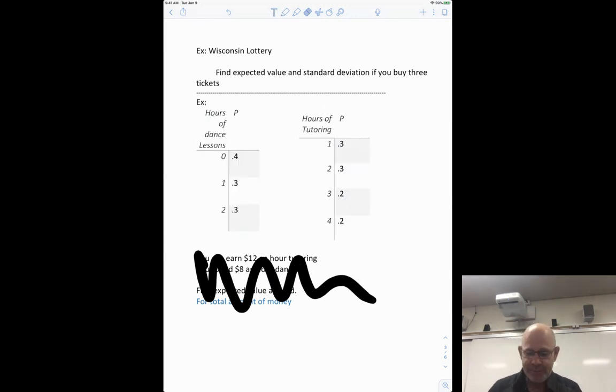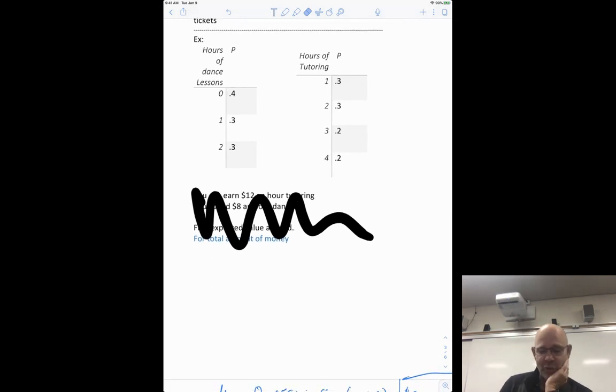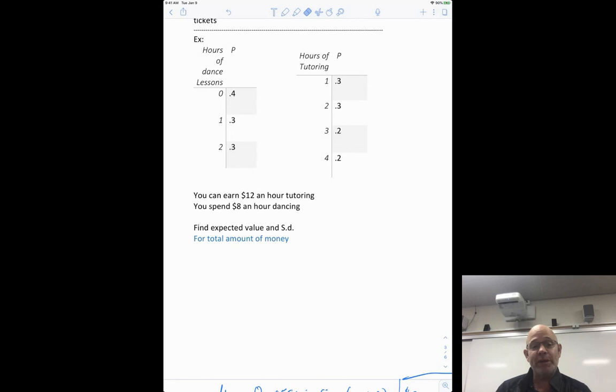So this allows us then to do a question like this. We've got this person who, that Wisconsin lottery, who each week dances, takes dance lessons for a certain amount of hours and also tutors. So they pay to take dance lessons. So here's information on dancing lessons. And then there's a different probability for the number of hours. So it's a 40% chance that they dance for zero hours, 30% chance of one, and a 30% chance of two. And then that's dancing. So they're going to pay for those lessons. And then there's tutoring. And these are the probabilities of their tutoring. One hour, two hours, three hours, four hours, and their corresponding probabilities. This person makes $12 an hour tutoring and they spend $8 an hour dancing. So the question becomes, what's the expected value and the standard deviation for the total amount of money that this person makes or spends during this week?